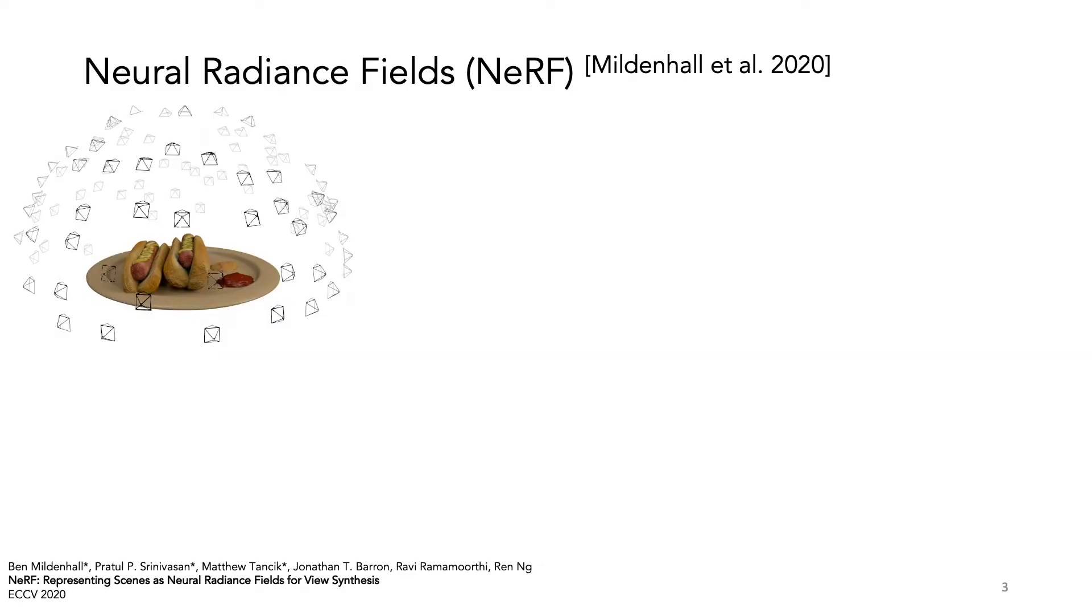Given the same data, a set of images, we can train a neural radiance field, or NeRF. The first part of NeRF gives us the volume density for each point in 3D space, Sigma.